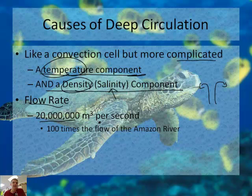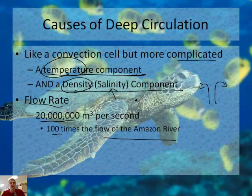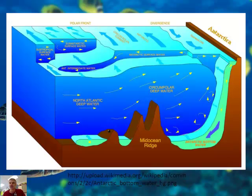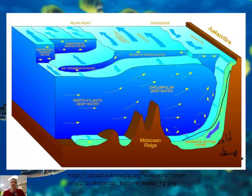It turns out the flow rate is unbelievable — 20 million cubic meters per second, which is 100 times the flow of the Amazon River, the largest volumetric river in the world. So we're talking about an absolutely huge flow of water. This stumps oceanographers — they understand why it sinks, because it's caused by cold, dense water, but what causes it to start the mixing process?